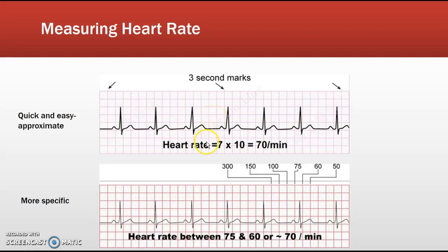The more specific way to measure heart rate is to remember this sequence of numbers: 300, 150, 100, 75, 60, 50, 43, 38. You look at the number of bold boxes between complexes and count them off. So if a complex occurs on the line and you count 300, 150, 100, 75, 60 — and the next complex falls between 60 and 75 — the heart rate is approximately 70 per minute. But we're going with the six-second method for this course.